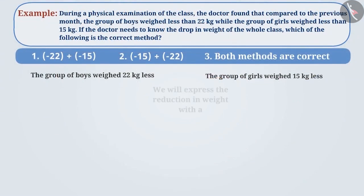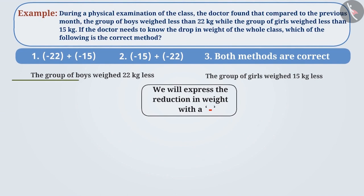In this example, we will express the reduction in weight with the minus sign. Since the group of boys weighed 22 kg less, we would express it by minus 22. Similarly, the group of girls weighed 15 kg less, so we will express it by minus 15.